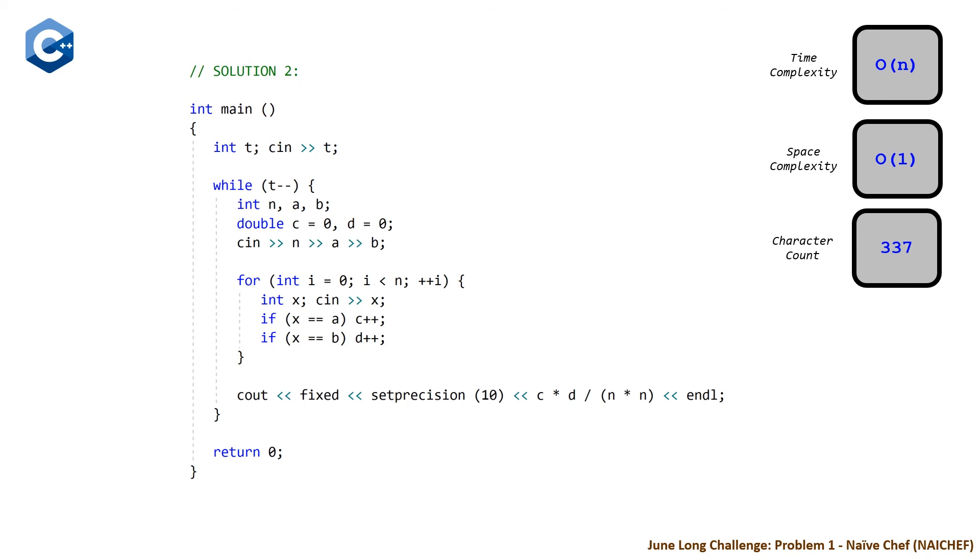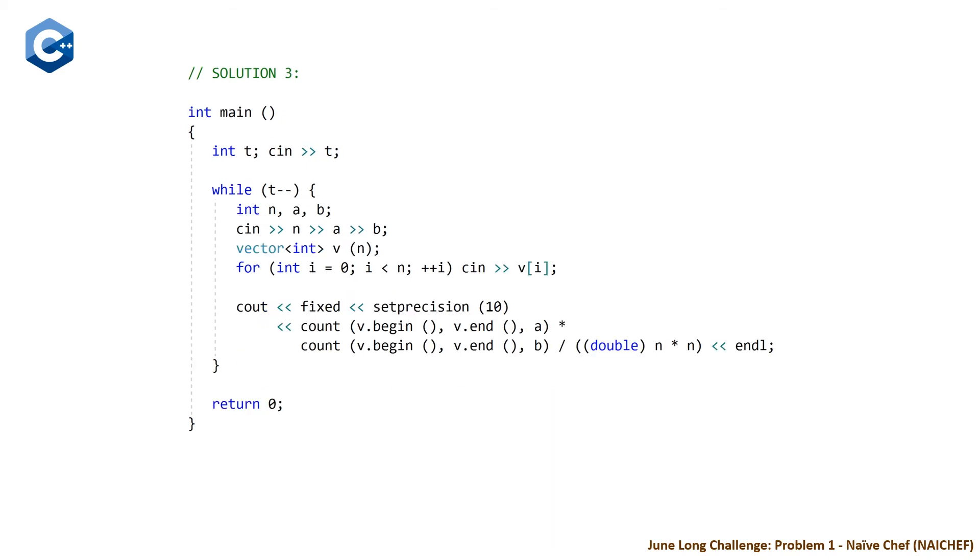So for our third solution we're going to do something similar but we're going to use an STL algorithm called std::count in order to do the same thing. So here we're going to store our values in a vector and we're going to have a slightly different for loop because we can use the input C in directly to the values or elements of our vector. And then once we do this we are just going to call count in the range of begin and end for our vector and then look for A and then multiply this by the count of the same range for B and then divide by n times n.